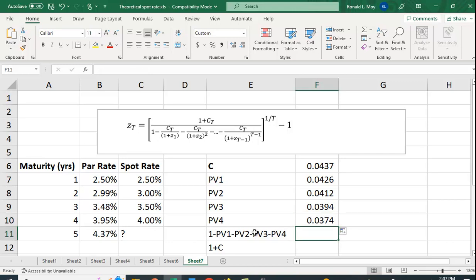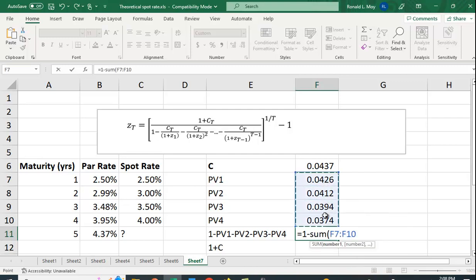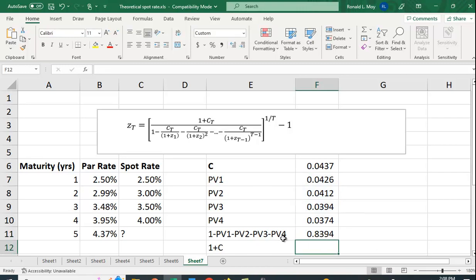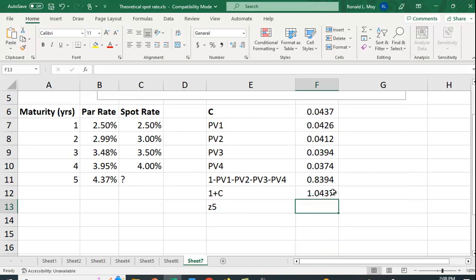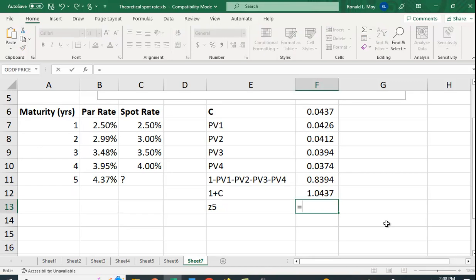Now I have the present value of the cash flows from years one through four discounted at the appropriate spot rate. I know I need this for the denominator. I'm just going to say one minus the sum of these four cash flows. One plus C is just going to be equal to one plus C here. Let's plug into that formula. We have to take this divided by this raised to the one-fifth power minus one.